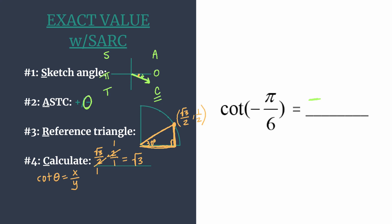So our cotangent of negative pi over 6, we'd already decided it was negative in step 2. So it's negative square root of 3. Thanks for watching and be sure to check the video description for links to more examples of worked out exact values.